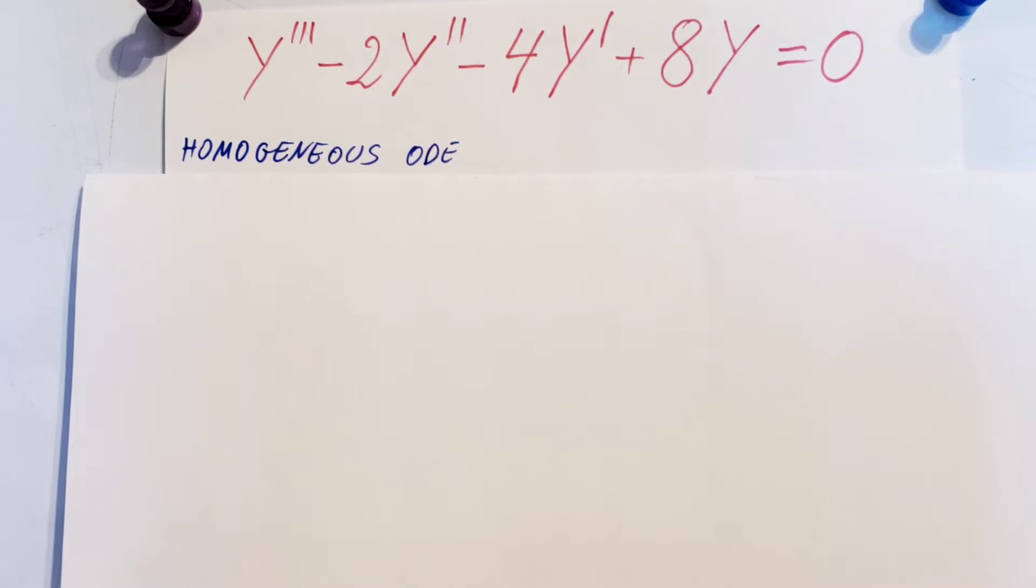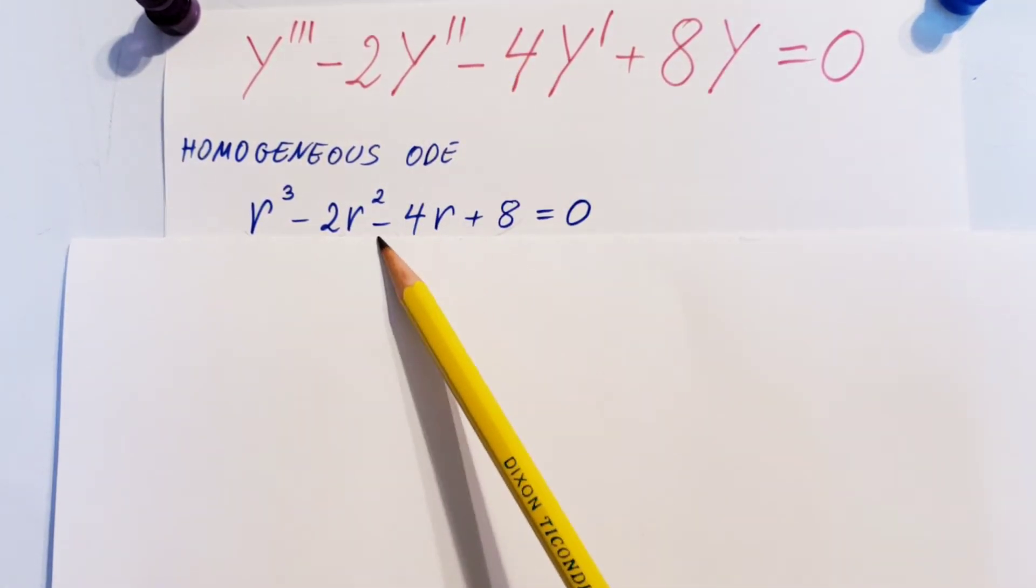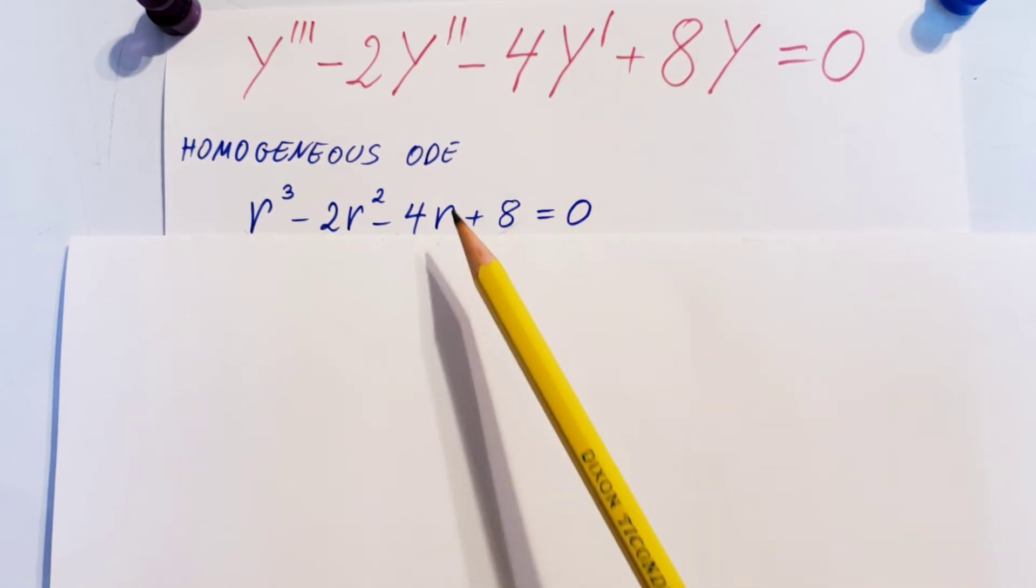We can go ahead and write up our characteristic equation right away. Here it is, r cubed minus 2r squared minus 4r plus 8 equals 0.